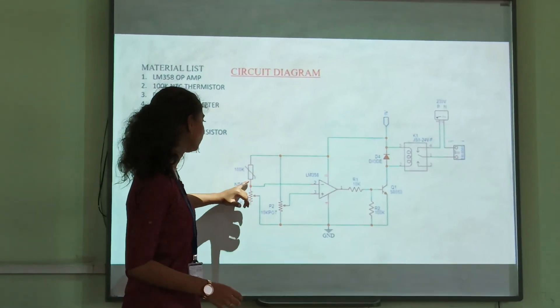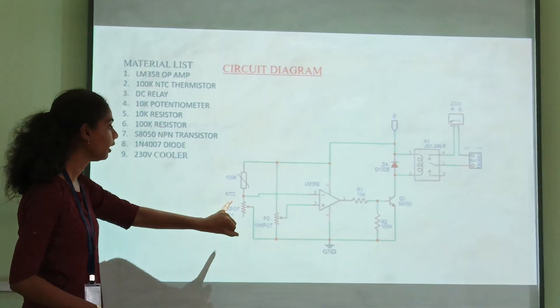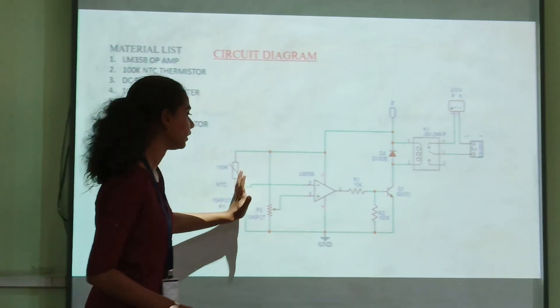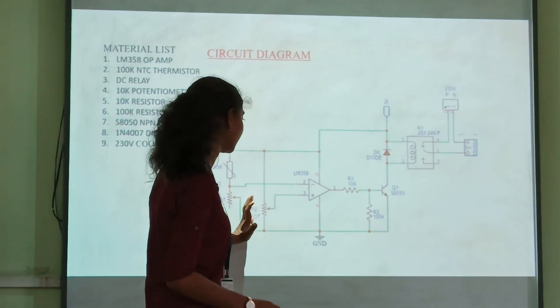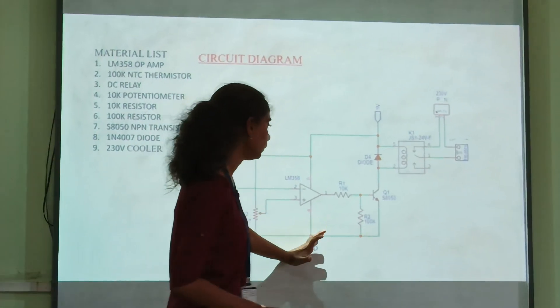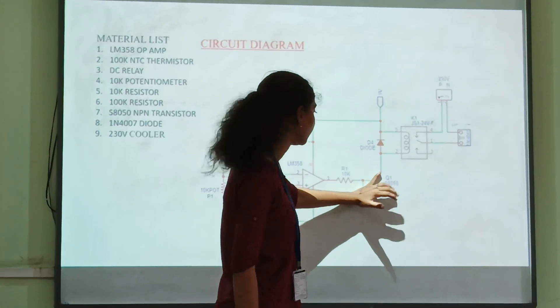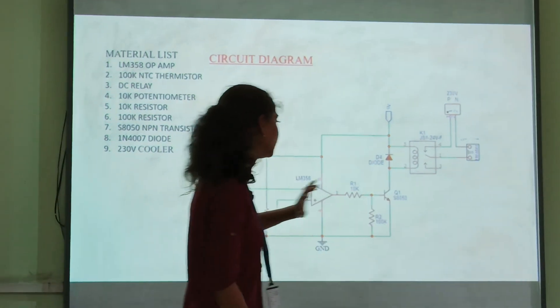Along with the 10k resistor and 10k potentiometer, these three components are connected from voltage to ground and connected to the NPN transistor and diode.